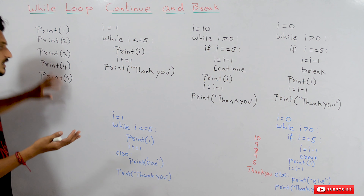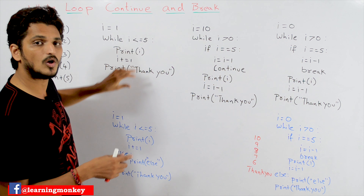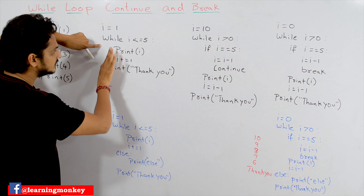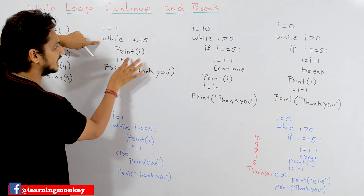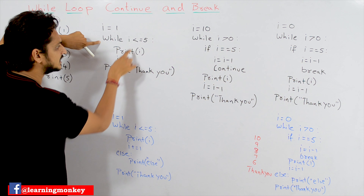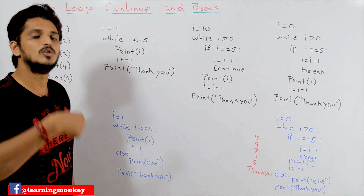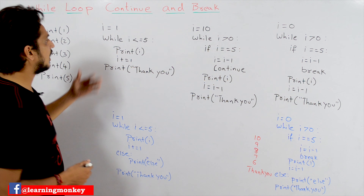Let's take i equal to 1. While — check the condition the same way as if conditions: if some condition is satisfied, then execute that block of code. Same way, while i less than or equal to 5 — if this condition satisfies, if this comparison operator returns true, then execute this block of code. This block of code belongs to while loop, that's why we give indentation here. Again check the condition; if condition satisfies, execute the code. The loop will execute until the condition fails.